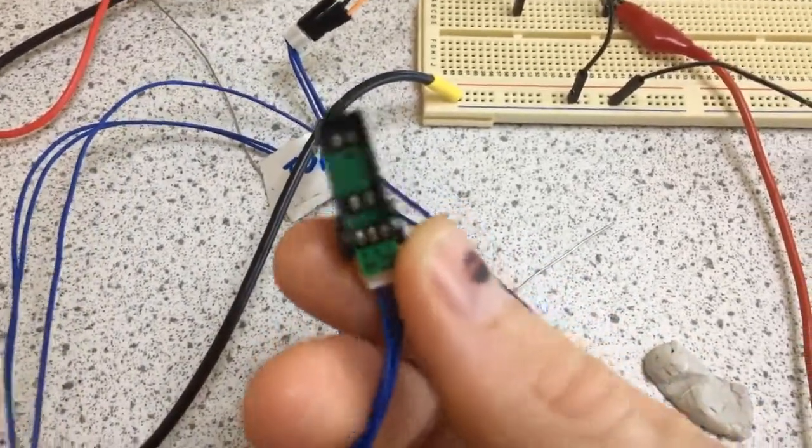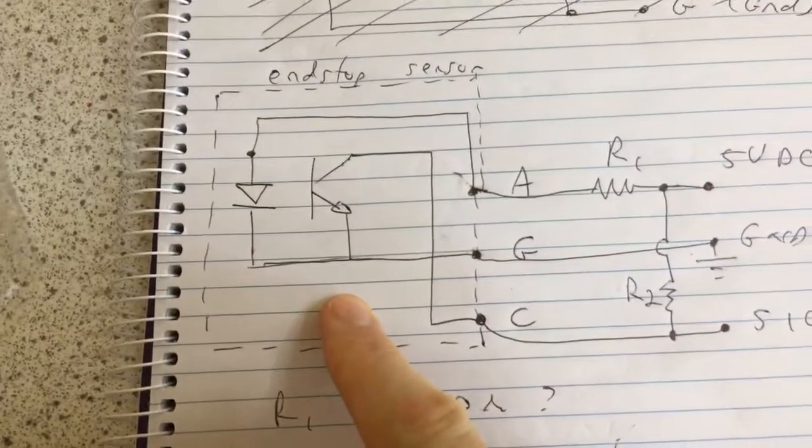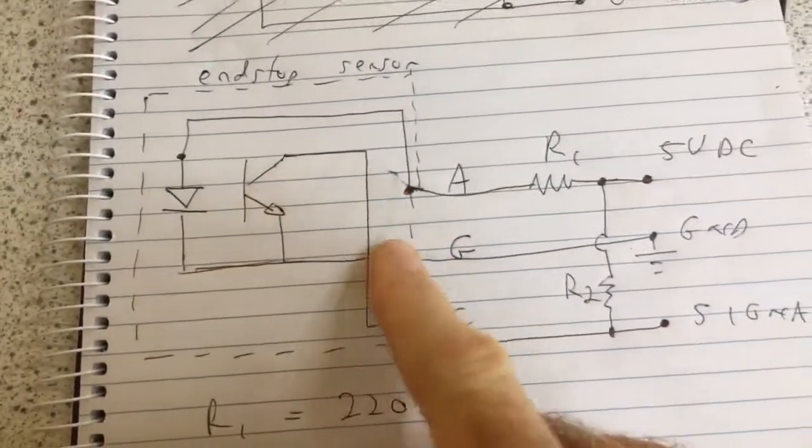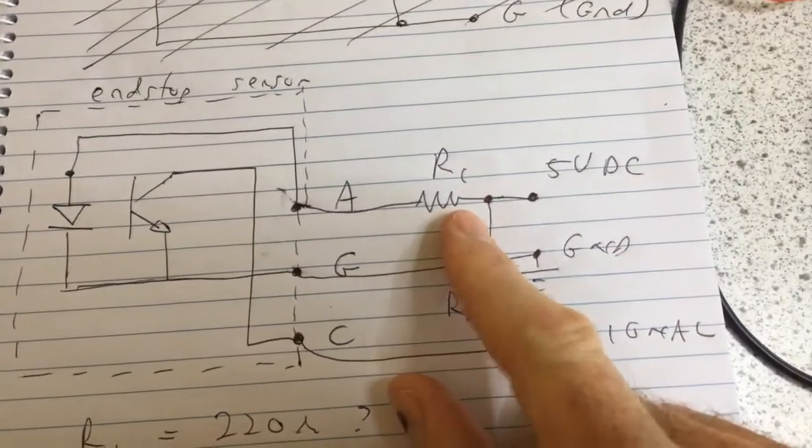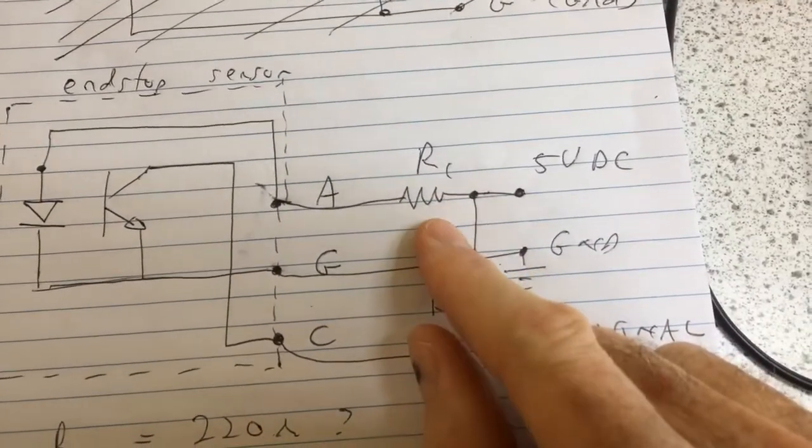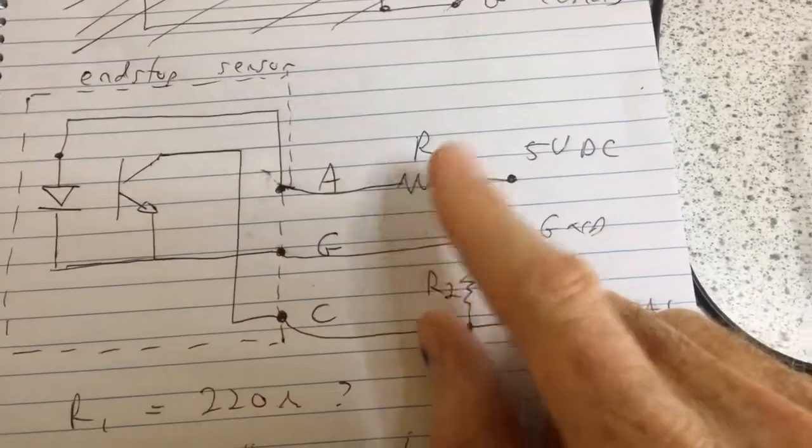I did a bit of Googling and found some circuits which would help me get started. Here you've got a symbol for an optical end stop sensor without the resistors. I've actually measured 150 ohms on the DaVinci control board, but the circuit I looked at used 220 ohms. It doesn't do any harm to go for a higher resistance.